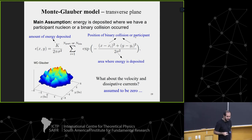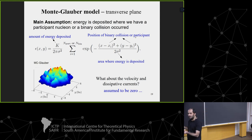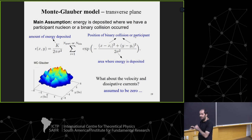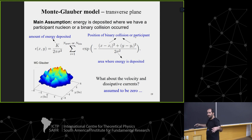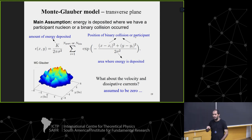An example initial condition from this model gives a lumpy energy distribution in the transverse plane. You can make it more lumpy by decreasing σ so energy is deposited in a smaller area, or smoother by increasing σ. Either way it looks like this, giving some prediction for the initial energy density. But you also need the initial velocity — with this zero-time approach, the initial transverse velocity is very small since there's no time to develop any.